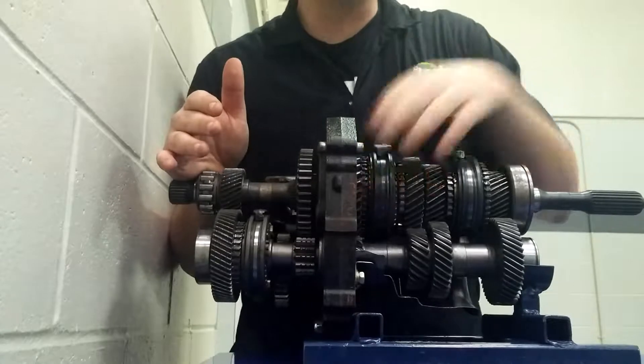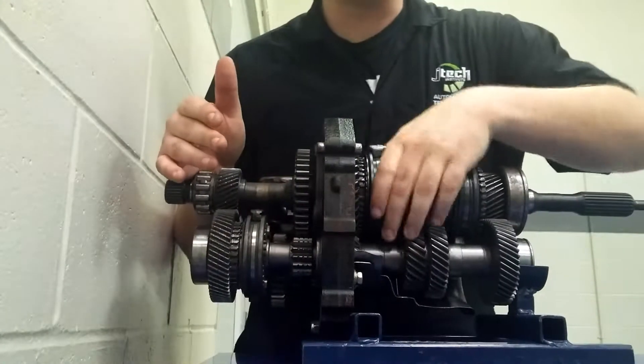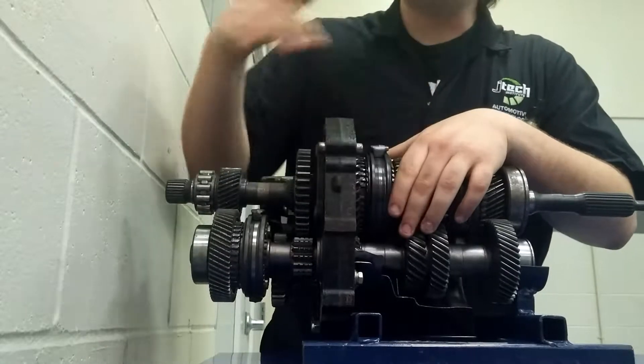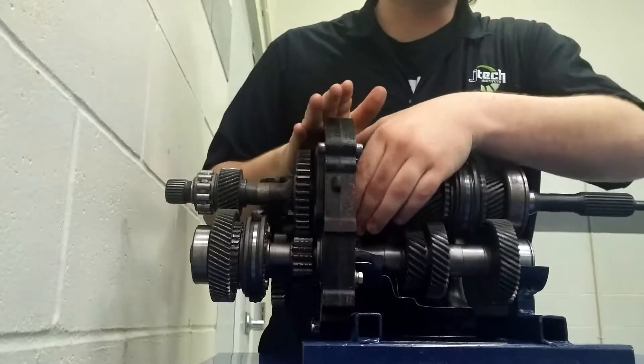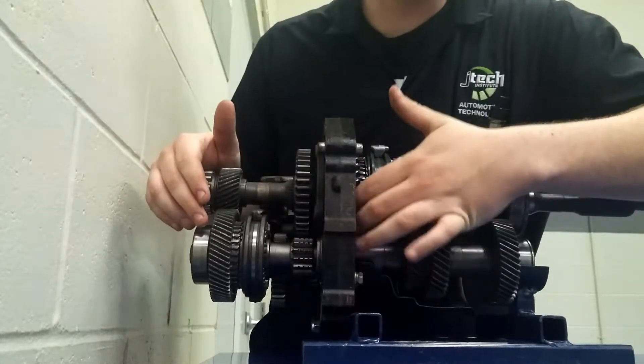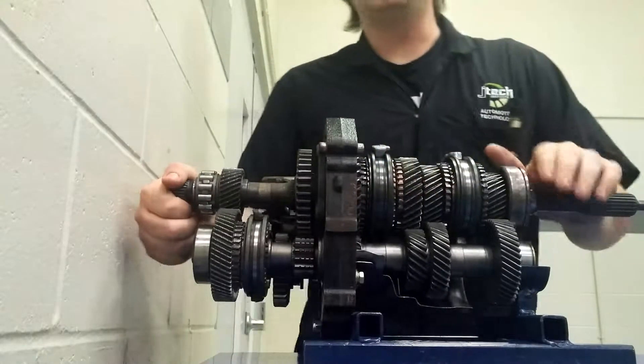So say right here, we got first gear. Your power is going to come in and go down to the counter shaft. When we lock this into first, this synchro right here is actually locked to the output shaft and first gear kind of floats. So when you lock it together, the power is now locked through first gear and it goes straight out the output shaft.